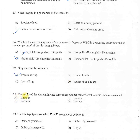Question 58: Atoms of an element having the same mass number but different atomic number are called — A: isotopes, B: isobars, C: isotones, D: isomers. The correct option is B — isobars.